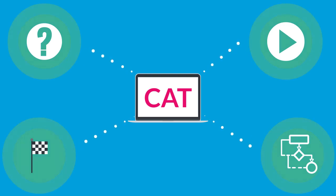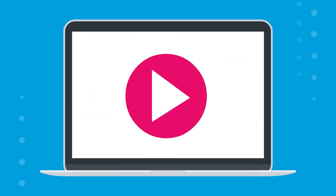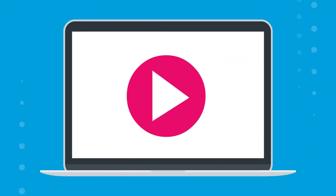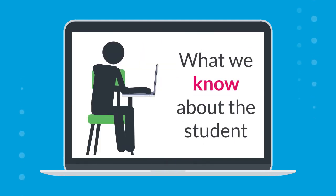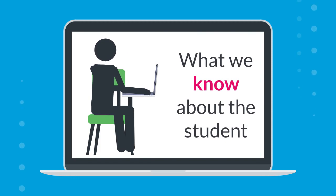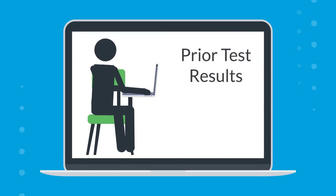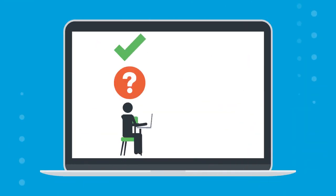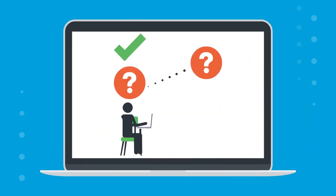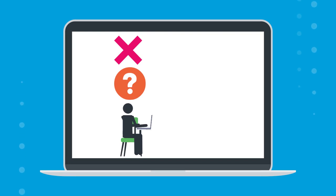So how does the CAT know where to start? In the Exact Path Diagnostic, the first question is chosen based on what we know about a student, which could be how the student performed on their last test or what grade level they are in. If the student gets the question right, they get a harder question; answer it wrong and they get an easier question.